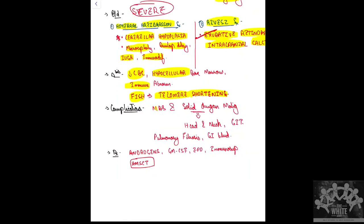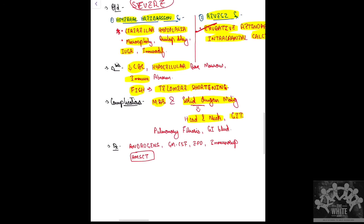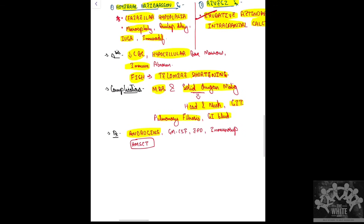Complications include hematological malignancy, solid organ malignancy (head and neck, GIT), pulmonary fibrosis, and GI bleeding. Treatment of bone marrow failure uses androgens, which can increase blood counts for three to four years, but patients eventually become resistant. Immunosuppressants, erythropoietin, and CSF have also been tried with limited results.